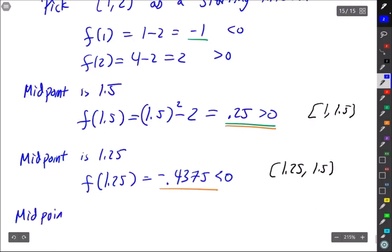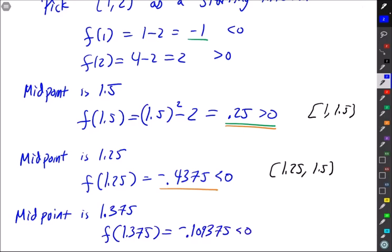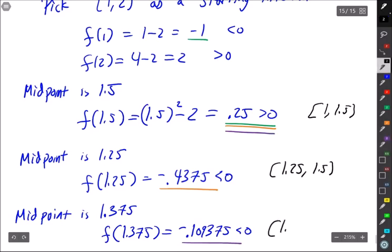Next our midpoint is 1.375 and f(1.375) is -0.109375 which is negative. So I want to pair that with the positive 1.5 value to get an interval [1.375, 1.5].